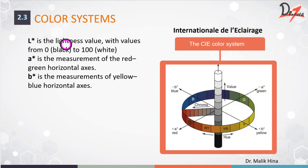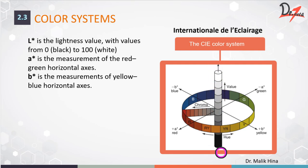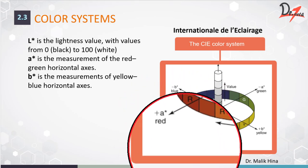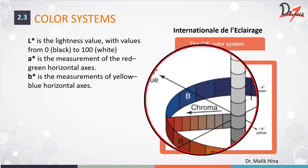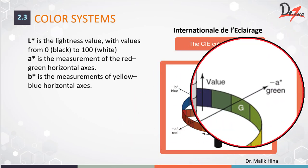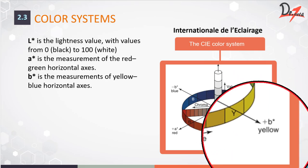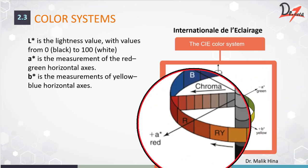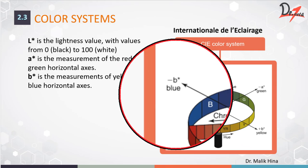The CIE LAB color space uses three coordinates. L refers to value, same as in the Munsell system — 0 is black and 100 is white, representing the highest value. On the A axis, positive A is red and negative A is green. On the B axis, positive B is yellow and negative B is blue.